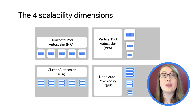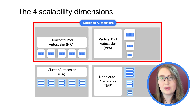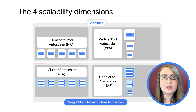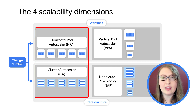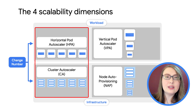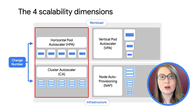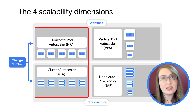This diagram illustrates these scalability dimensions. On the top, you'll see autoscalers that relate to scaling your workloads, or Kubernetes pods. On the bottom, you'll see autoscalers that relate to scaling your infrastructure, or nodes. The horizontal pod autoscaler and cluster autoscaler, both on the left of the diagram, deal with increasing or decreasing the number of something. In the case of HPA, that means increasing the number of pods running your workload to meet demand, or potentially decreasing the number when demand is low. The cluster autoscaler can be configured to increase the number of nodes in your cluster to meet demand, or to reduce the number of nodes during times of low demand.